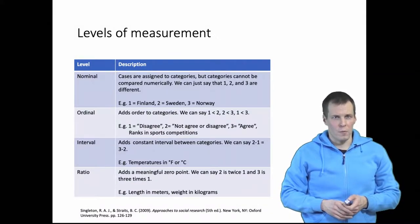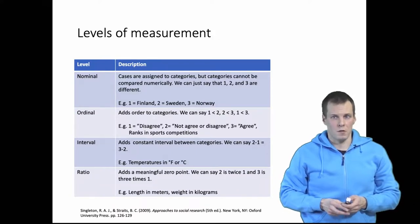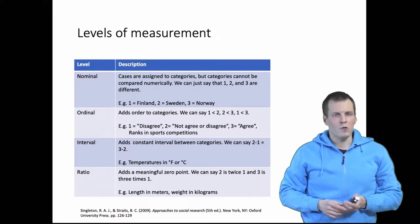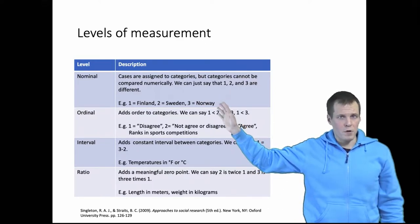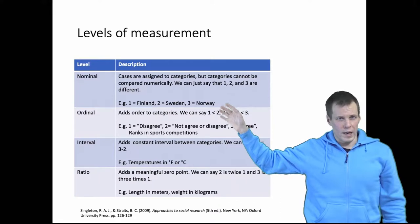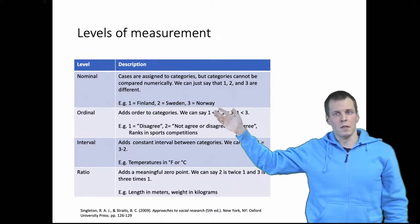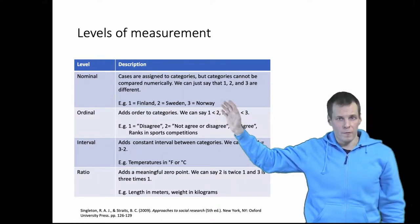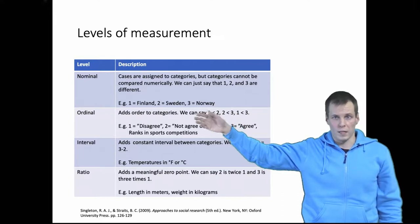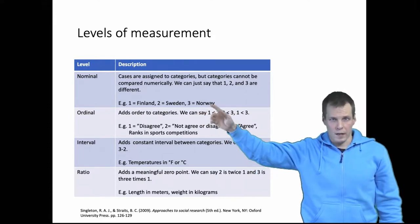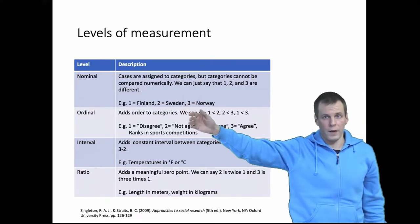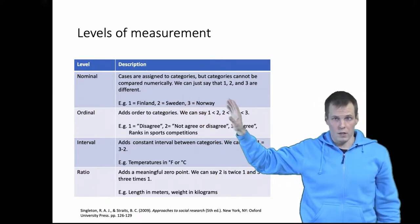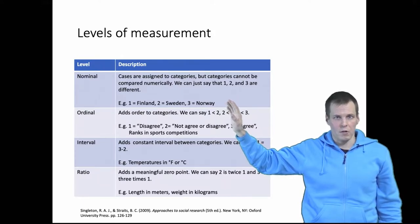There are four levels of measurement typically introduced in research methods books such as Singleton and Straits. On the most primitive level, data are nominal, which means that we have numbers referring to different categories. The values are different but we can't really compare the numbers. For example, Finland is one, Sweden is two, Norway is three. We can't say that Finland plus Sweden is Norway, or that Sweden is more than Finland. These are just numbers that are labels for some abstract categories.